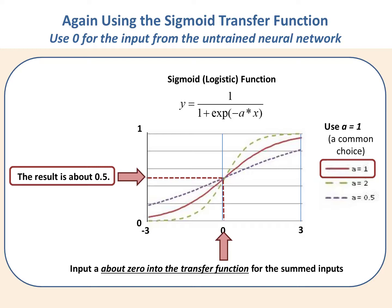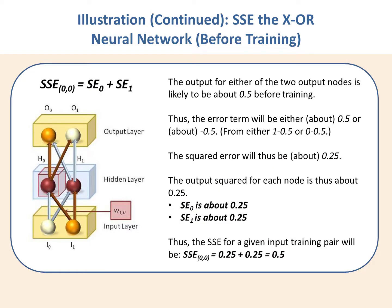At the beginning of training, we're sending positive and negative values into the output node that approximately cancel each other out, giving a value close to zero into the transfer function. Given that we're using a sigmoidal transfer function, the output of the transfer function is about 0.5. This is not unusual before training — the weights haven't been trained yet, so the output will typically be about 0.5.